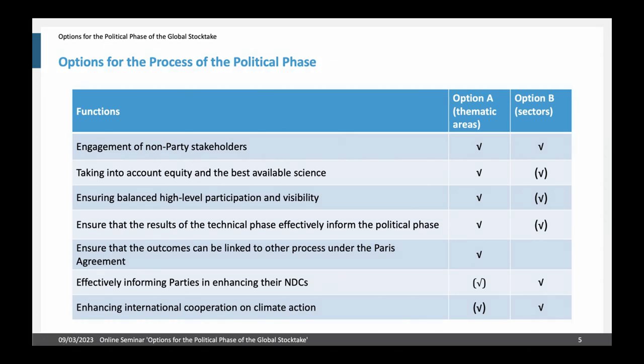We looked at specific functions and whether the options would fulfill them. The first function is the engagement of non-party stakeholders. There are specialized non-party organizations focusing on the main thematic areas and also on specific sectors, which is why engagement of non-party stakeholders works well under both options. However, for the next three functions — equity, high level participation, and linkage to the technical phase — option A works well, whereas option B may not, mainly because these topics are very cross-sectoral.